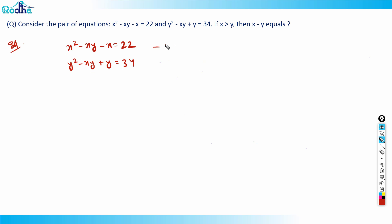If I add these two equations, I get x² + y² - 2xy, and it's minus x plus y equals 56. I can observe this term is equal to (x - y)².